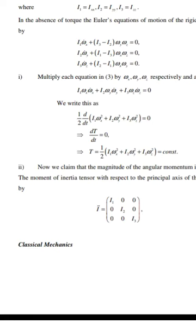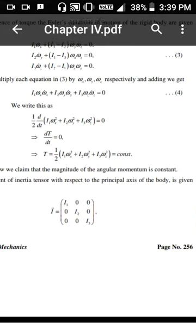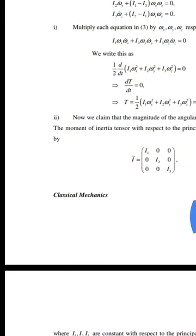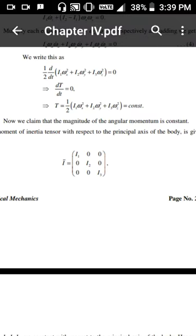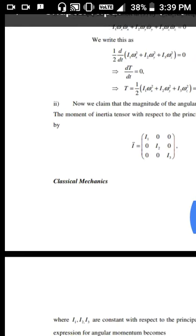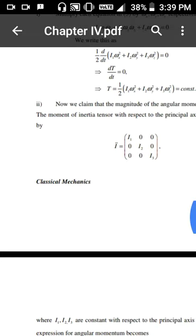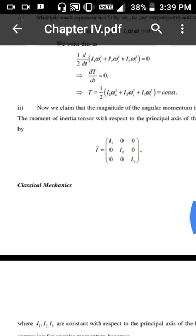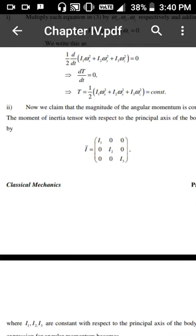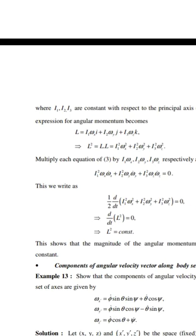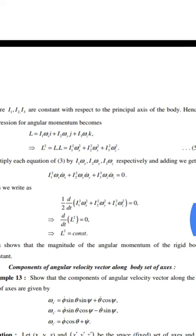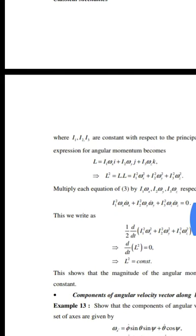Now we claim that the magnitude of the angular momentum is also constant. The inertia tensor with respect to the principal axis of the body is diagonal: diag(I₁, I₂, I₃), where I₁, I₂, I₃ are constant. Hence the angular momentum vector is L = I₁·ωx·î + I₂·ωy·ĵ + I₃·ωz·k̂.